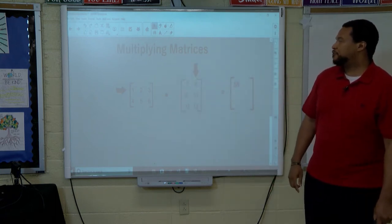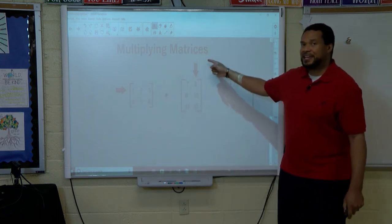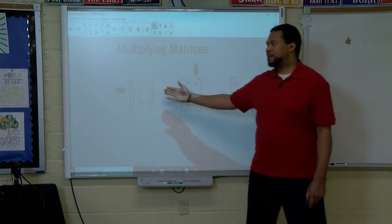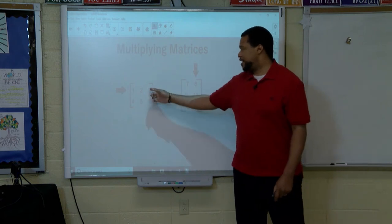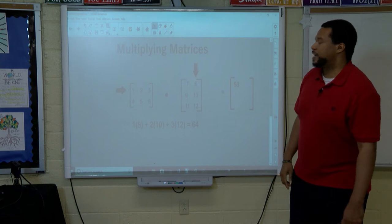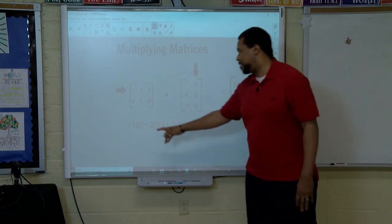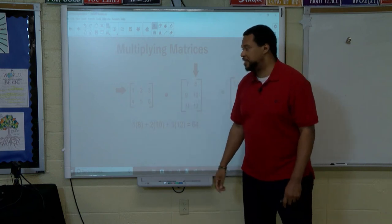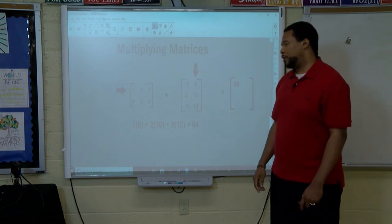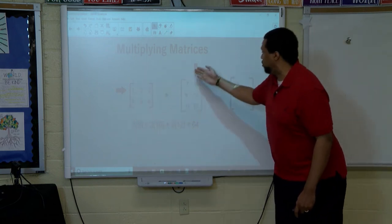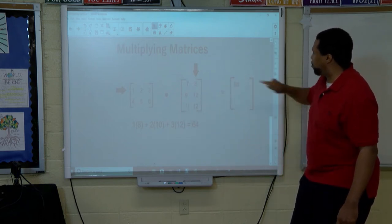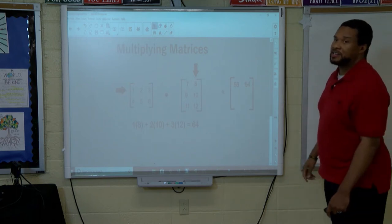Next we want to take the first row, second column. One times eight, two times ten, and three times twelve. We take the sum of those values. One times eight is eight, two times ten is twenty, and three times twelve is thirty-six. When we add those values, we get sixty-four. We put that in the first row, second column, so we place sixty-four there.